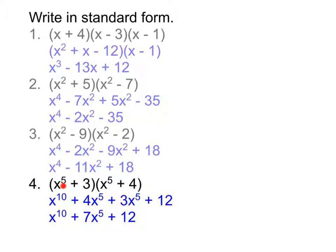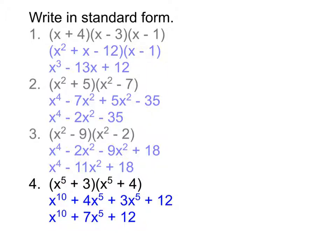When each parenthesis starts with x to the fifth, notice the exponents we end up with: x to the tenth and x to the fifth. To get x to the tenth, you take the original exponent and multiply by two — that pattern holds throughout. We're going to use that to factor these three new problems, so go ahead and write them down and we'll see how to approach them.